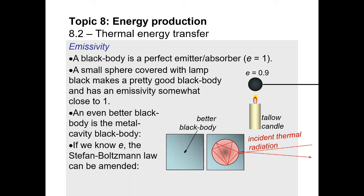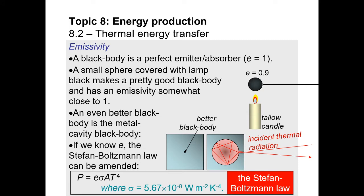Now we are going to amend the Stefan-Boltzmann law. Originally, sigma AT to the 4 equals power — that was for a black body. But usually you don't have a perfect black body; it's either 90% of a black body or maybe 50%, whatever it happens to be. So we're going to amend the Stefan-Boltzmann law and include emissivity. Whatever power you would have originally had, you multiply that by the percentage — the percentage of radiation that is actually re-emitted. This gives us a better value for our calculations.